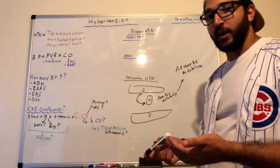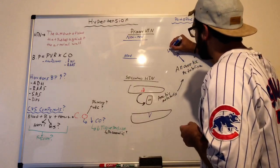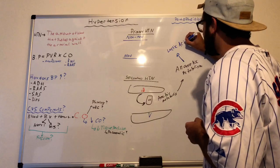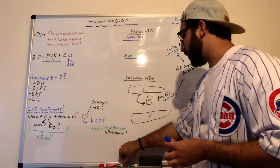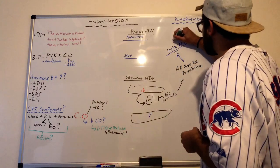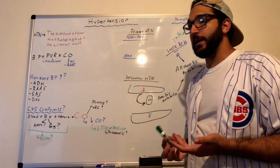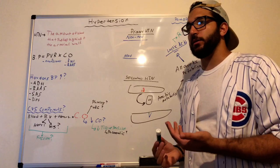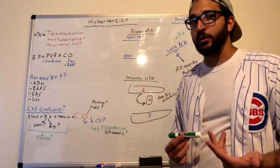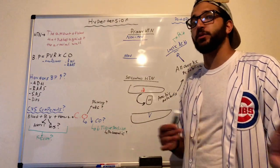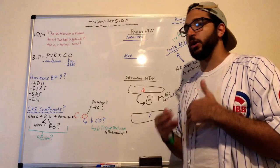When cells are not oxygenated correctly, they switch from aerobic to anaerobic metabolism. The byproduct of anaerobic metabolism is lactic acid. The buildup of lactic acid causes pain and can lead to deadly dysrhythmias such as ventricular tachycardia and ventricular fibrillation. We need to maintain tissue perfusion and good cardiac output at all times.